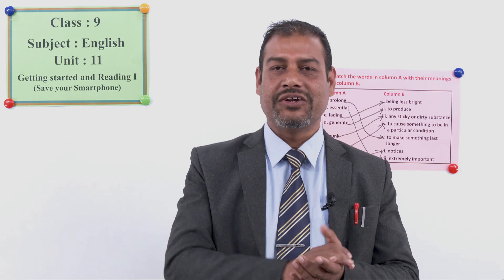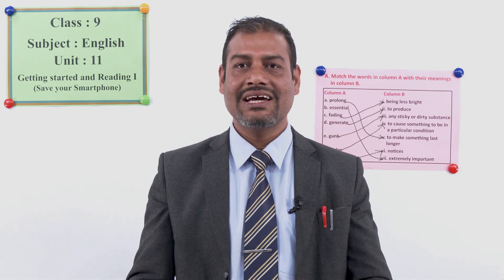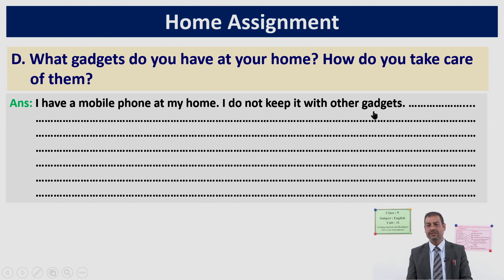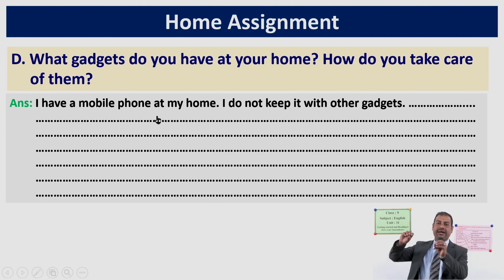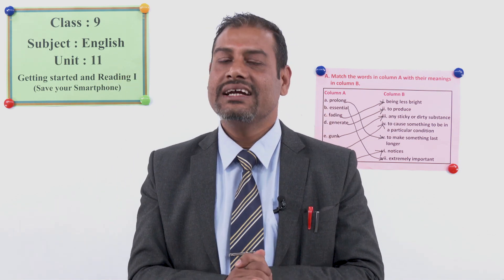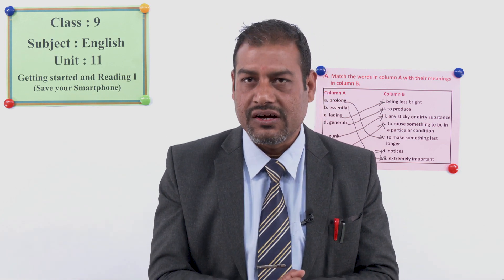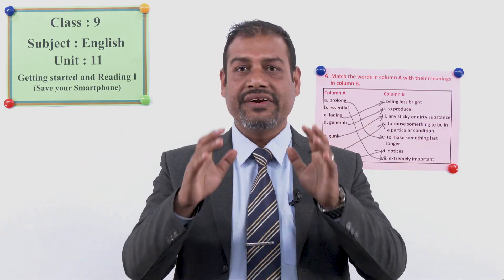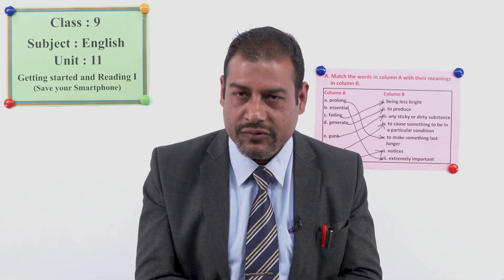After this, your home assignment is: what gadgets do you have at home, and how do you take care of them? For example: I have a mobile phone at home. I do not keep it with other gadgets — this is how I take care of my mobile phone. You can add more gadgets and write how you take care of them. Don't forget to show your English teacher. Dear students, we have come to the end of today's class. I hope you enjoyed and learned a lot. Please read this text once again at home. Have a wonderful time, goodbye!